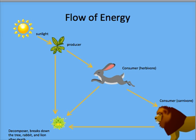In review, energy from the sun is harnessed by plants to create food. Consumers, such as herbivores, eat the plants, and then the herbivores are eaten by carnivores, such as lions. After death, the remains of all living organisms are decomposed by bacteria and their nutrients are recycled.